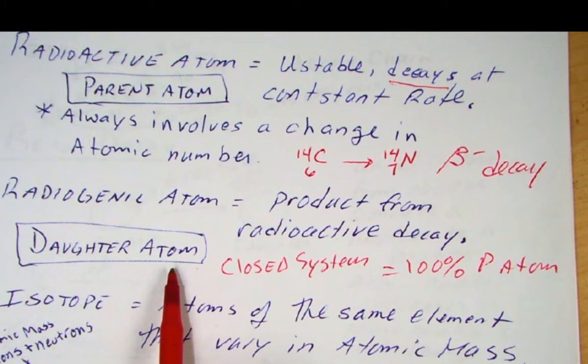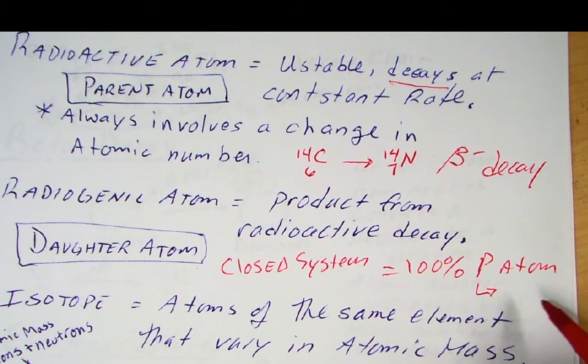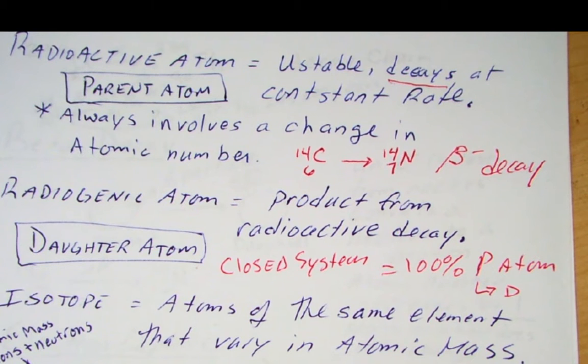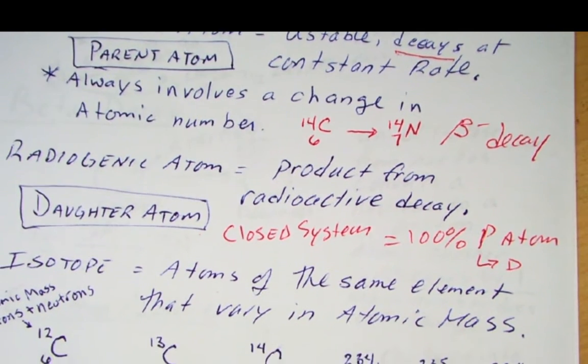At the beginning, there's going to be no daughters. Eventually, these parent atoms are going to decay, and some of them will be converted to daughter atoms. And that will be after some time. Now, that depends on the decay rate of the radioactive atom. And the way we're going to count them, we're going to use half-life, as you'll see in a moment.